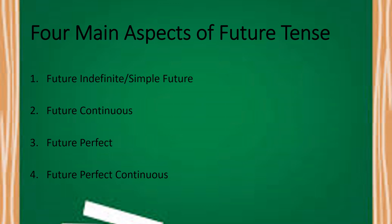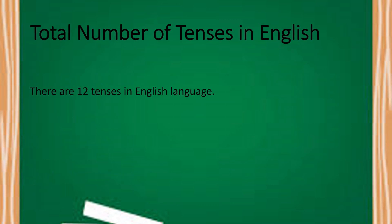Now you know that the total number of tenses in English language is twelve. Four from present tense, four from past tense and four from future tense. So the total number becomes twelve.